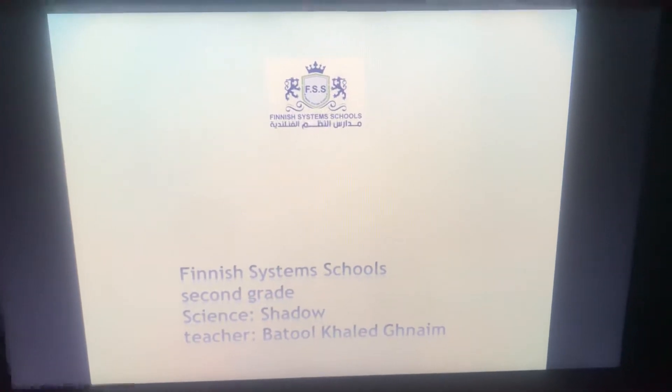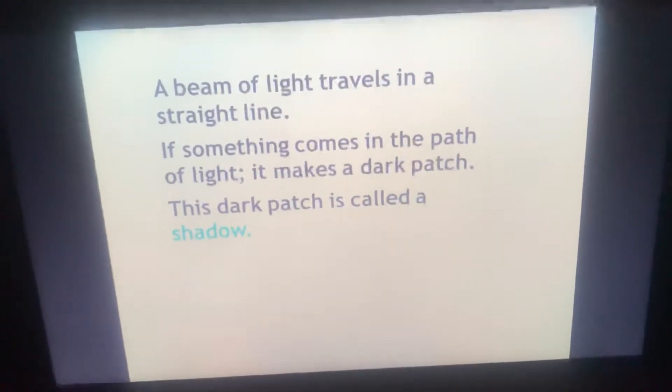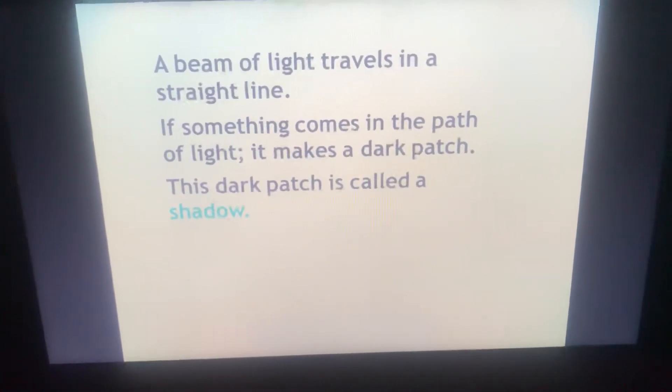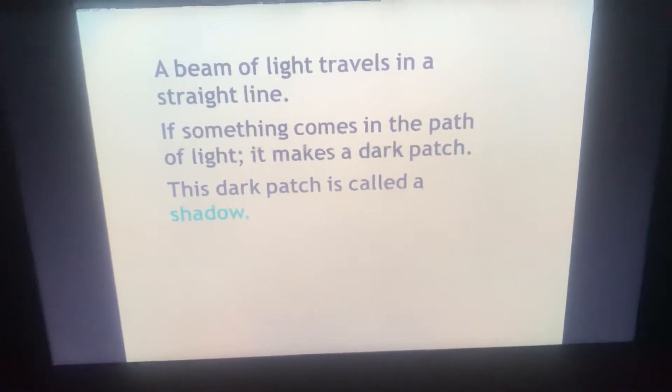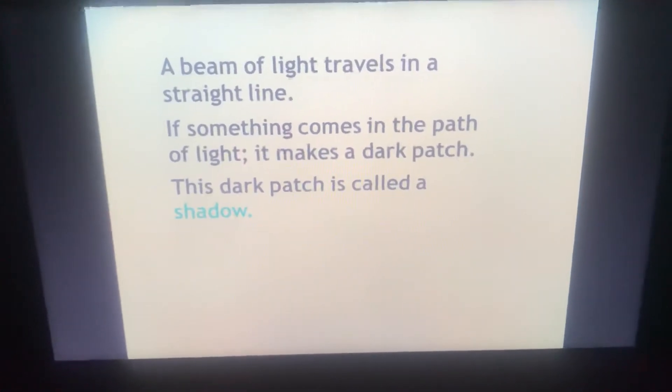Our title is Shadow. A beam of light travels in a straight line. If something comes in the path of light, it makes a dark patch. This dark patch is called a shadow.